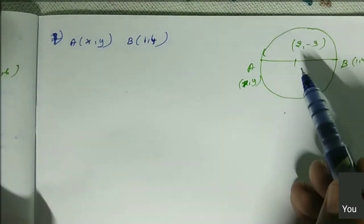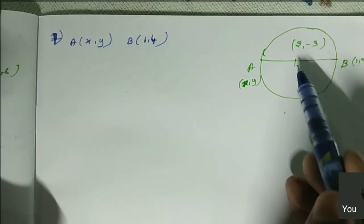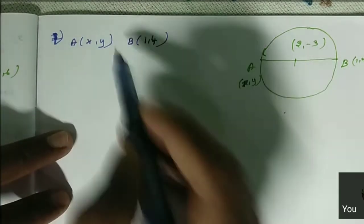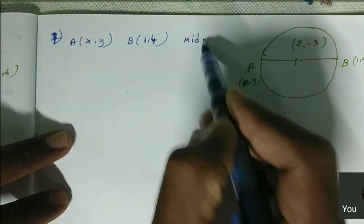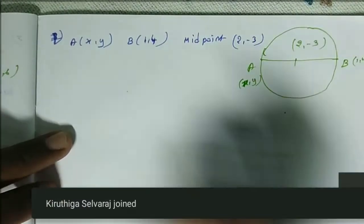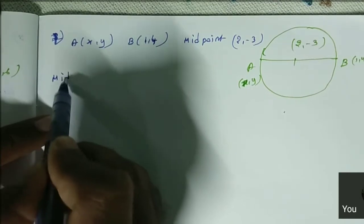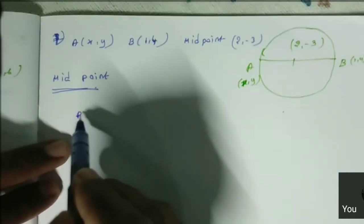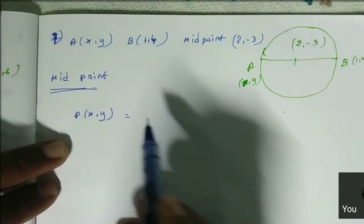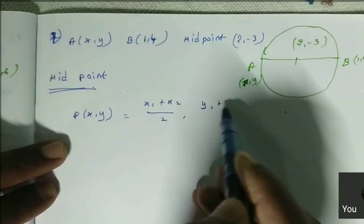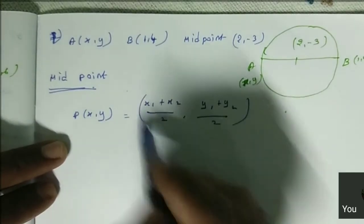Now, we want to use the section formula or midpoint formula. Because C is a midpoint only. In this line, the midpoint is (2, -3). So now you can use the midpoint formula. Midpoint P(x, y) is equal to (x1 + x2)/2, (y1 + y2)/2.